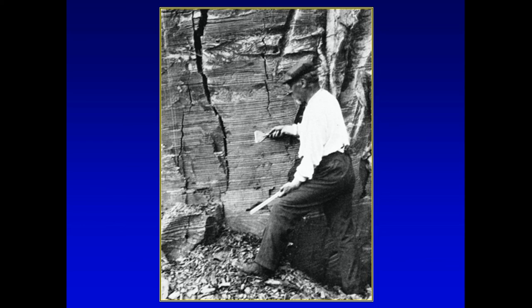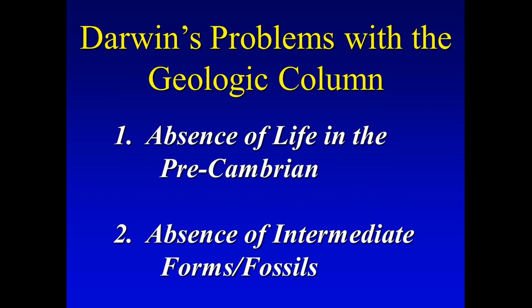Darwin noticed two problems: the absence of life in the Precambrian (the cryptozoic), and the absence of any intermediate forms. His comment was that until they solve these two problems, his general theory will not stand. And it has not been proven to this point.